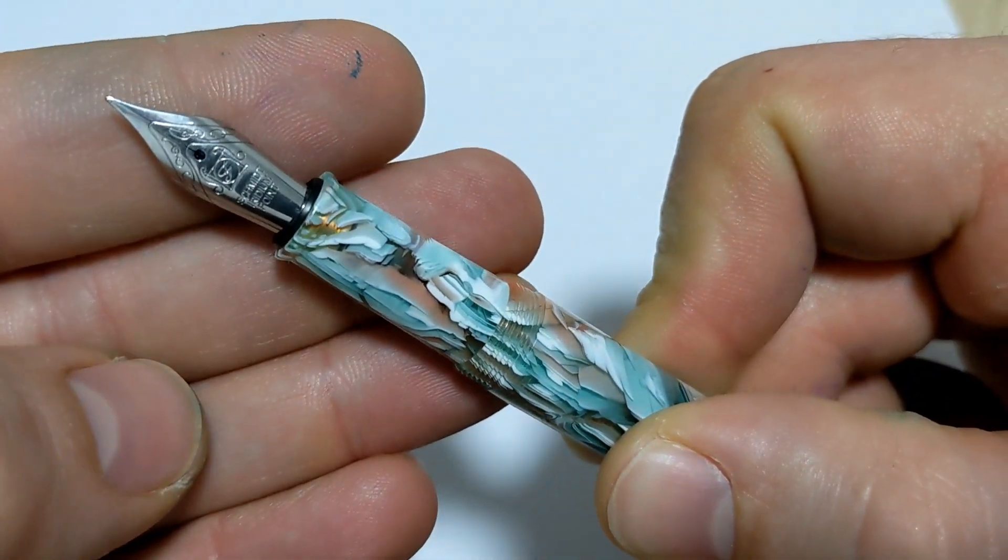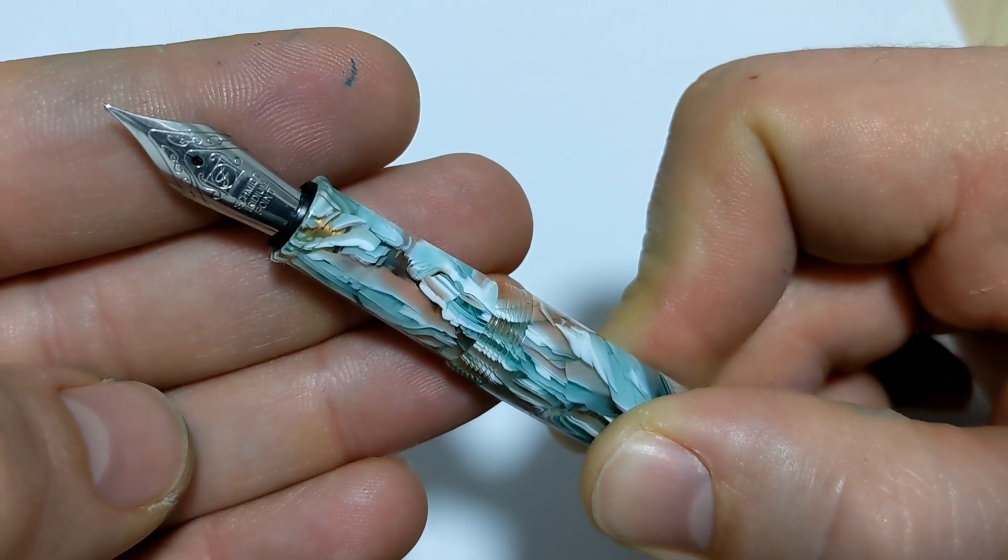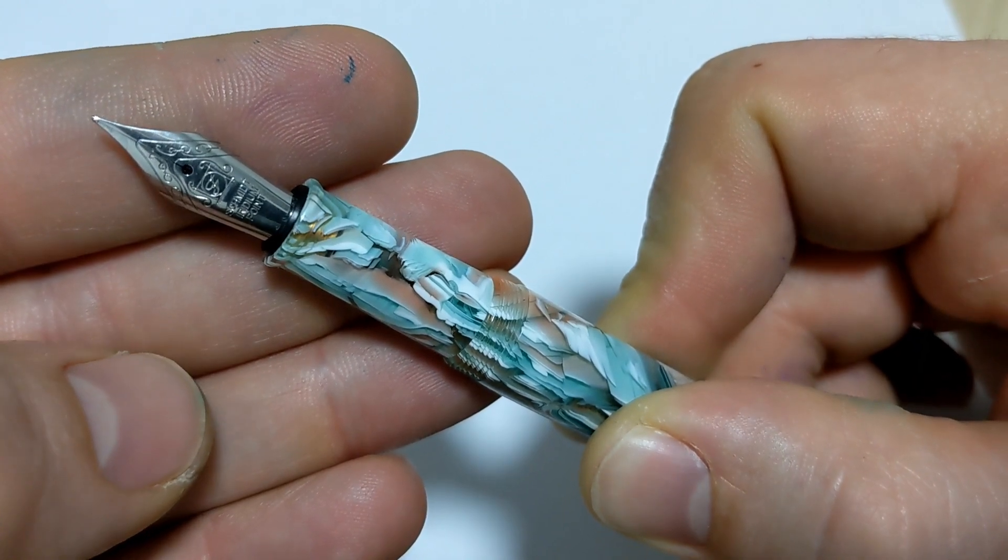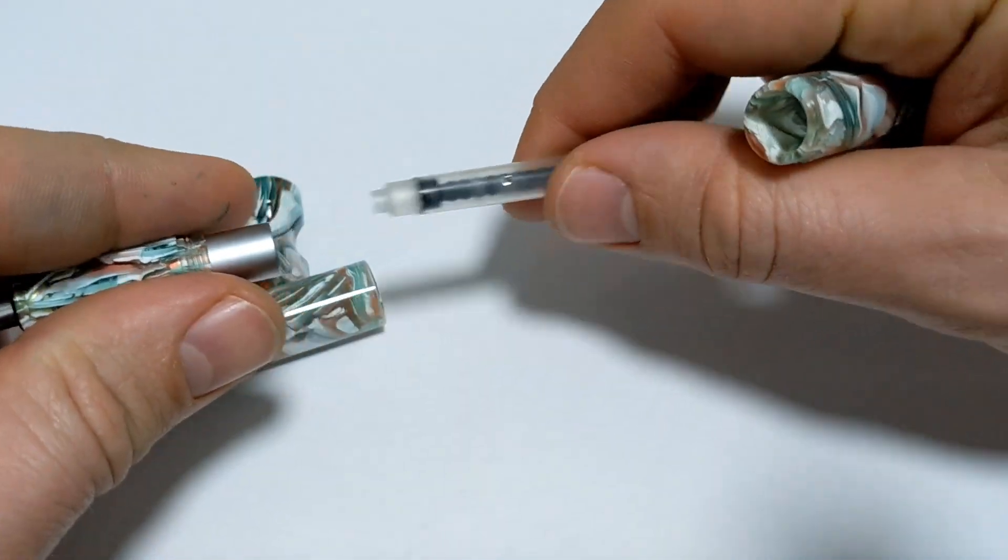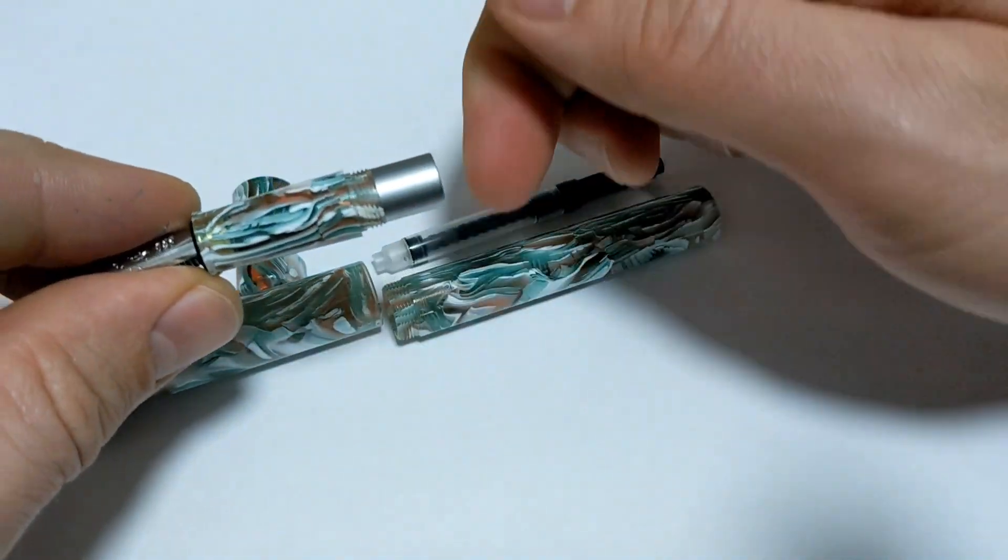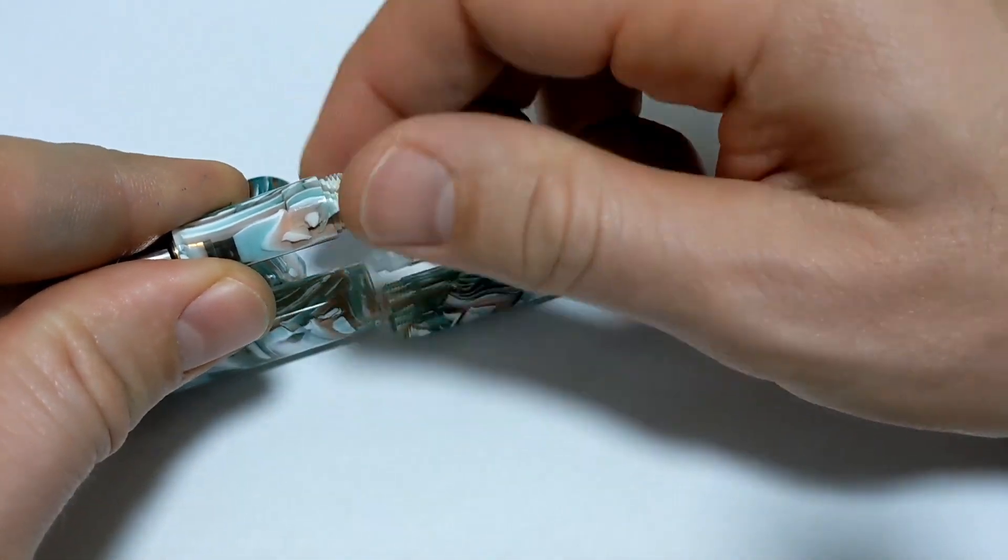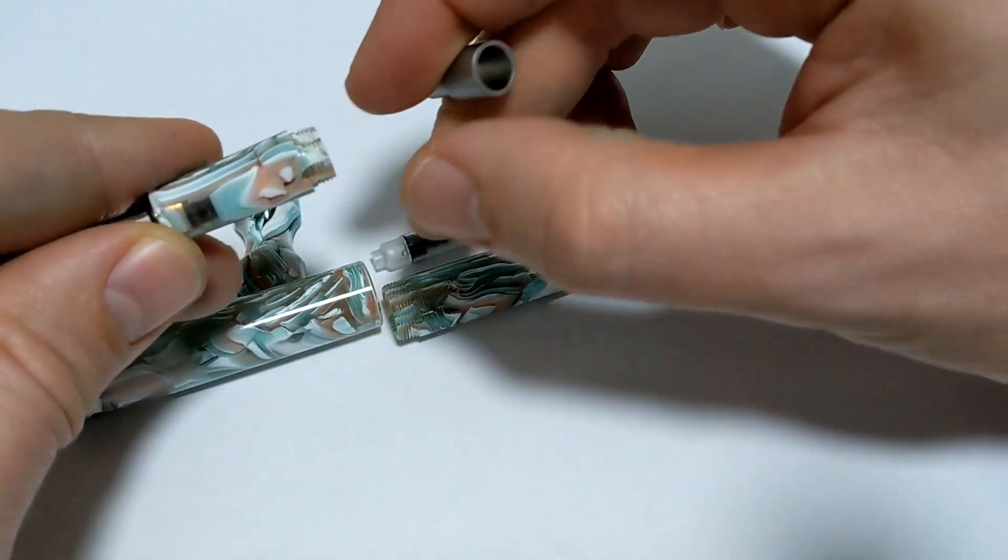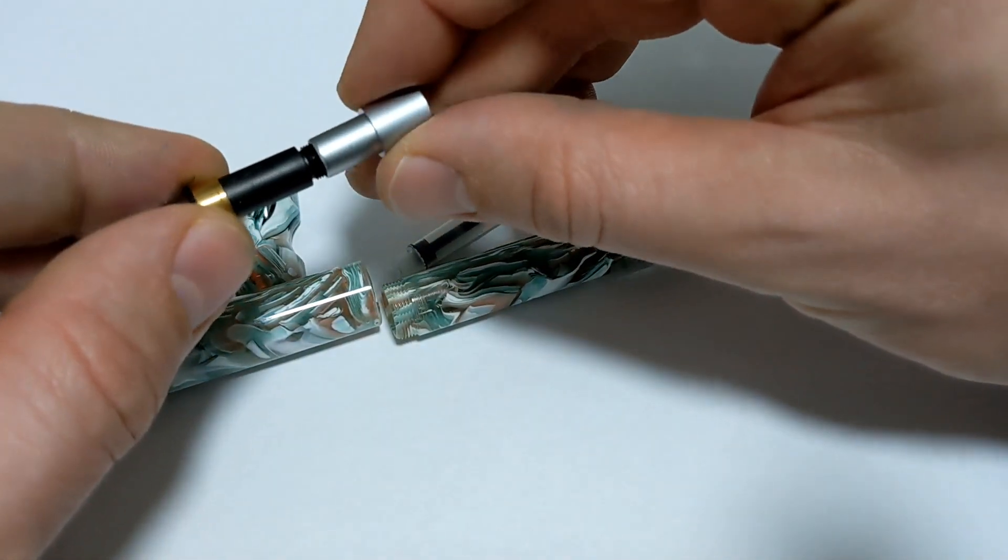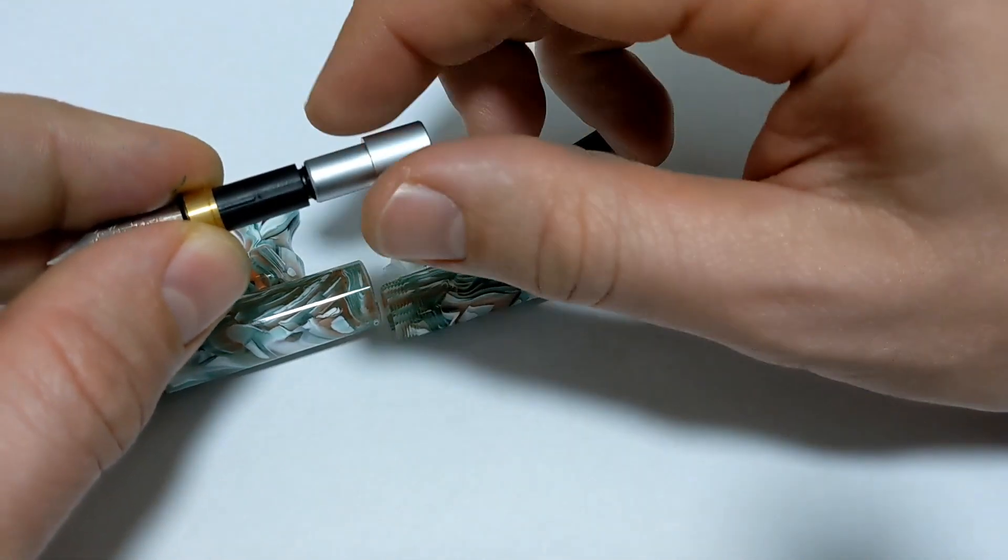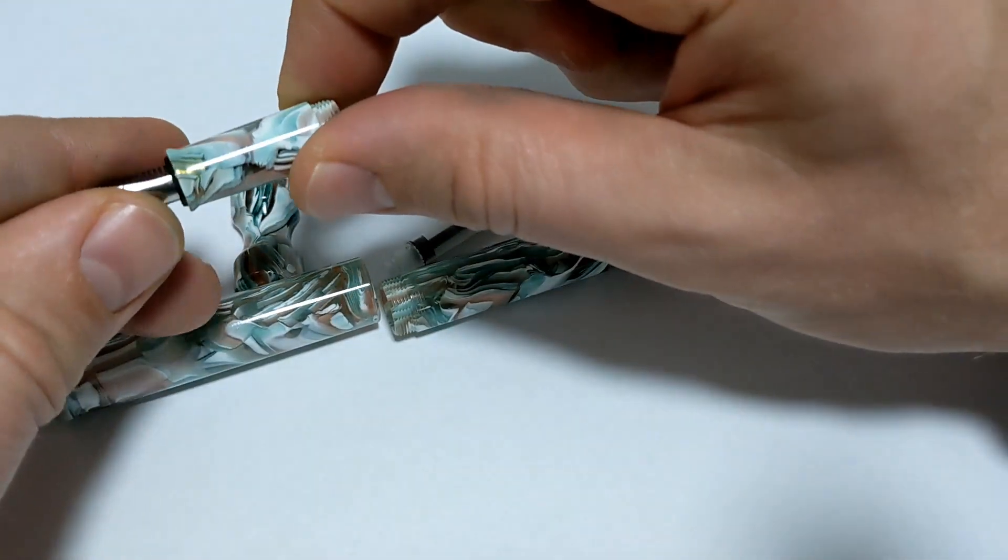This one comes with a Schmidt nib, feed, and converter unit all together. It's just the guts of Schmidt in a different looking pen body. We've all seen this before - cartridge converter. To take it apart, there's just this machined piece, whether it's steel or aluminum, feels like aluminum to me, pretty light. These are just threaded into each other, so they just made this slug to accommodate the threads and to fit into the section. That's all you do to take it apart.